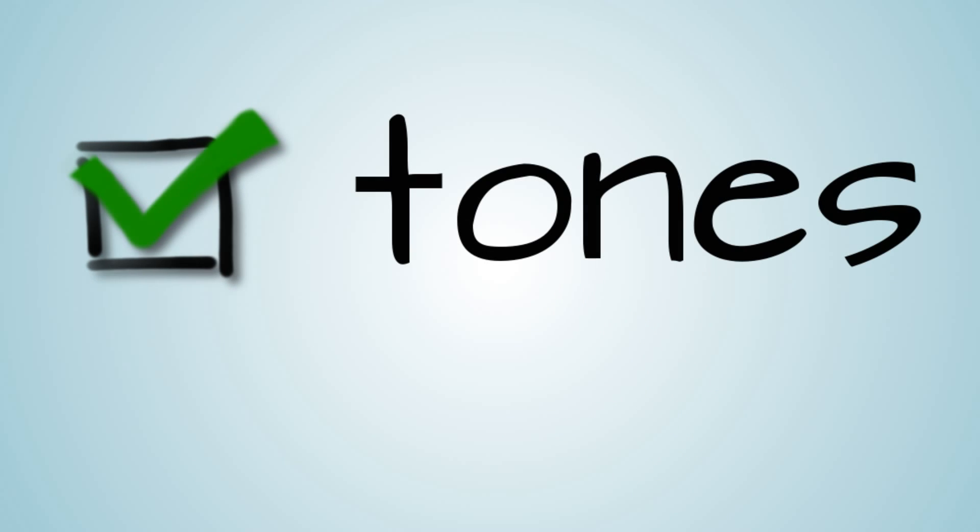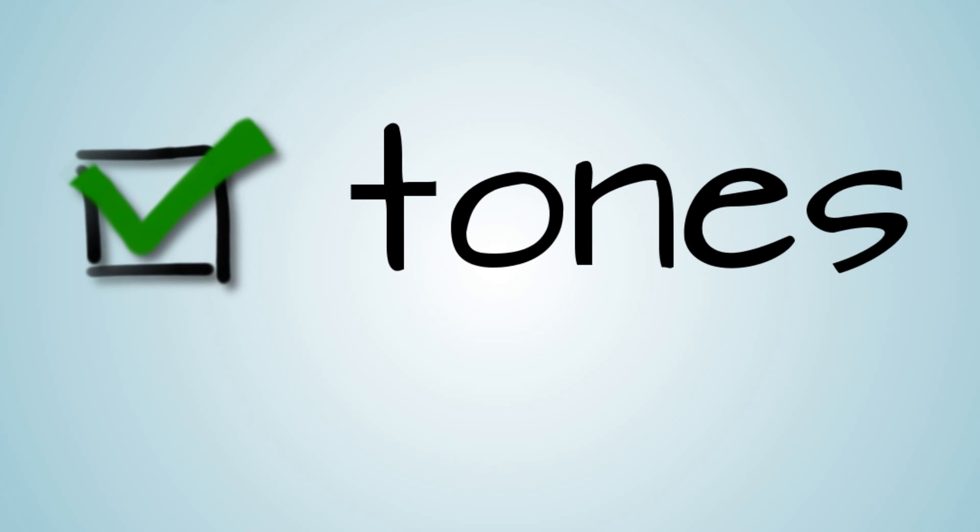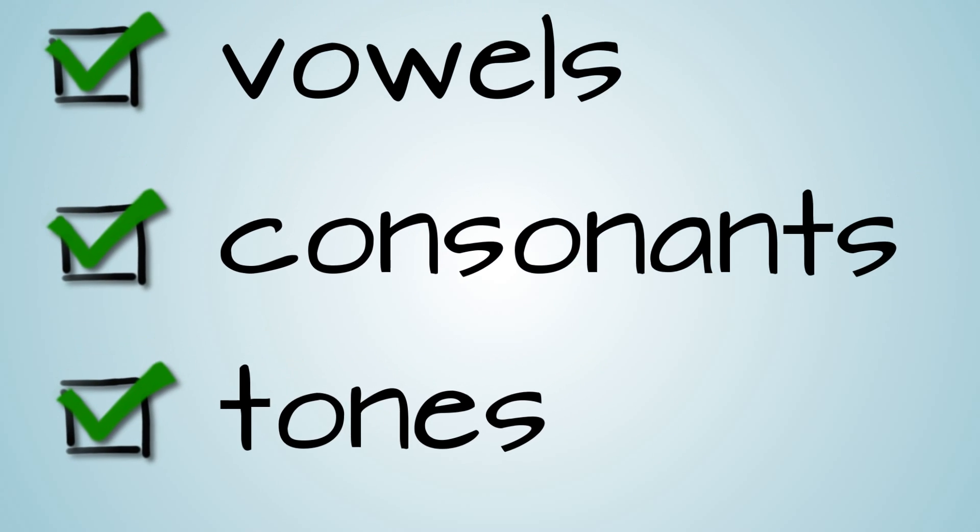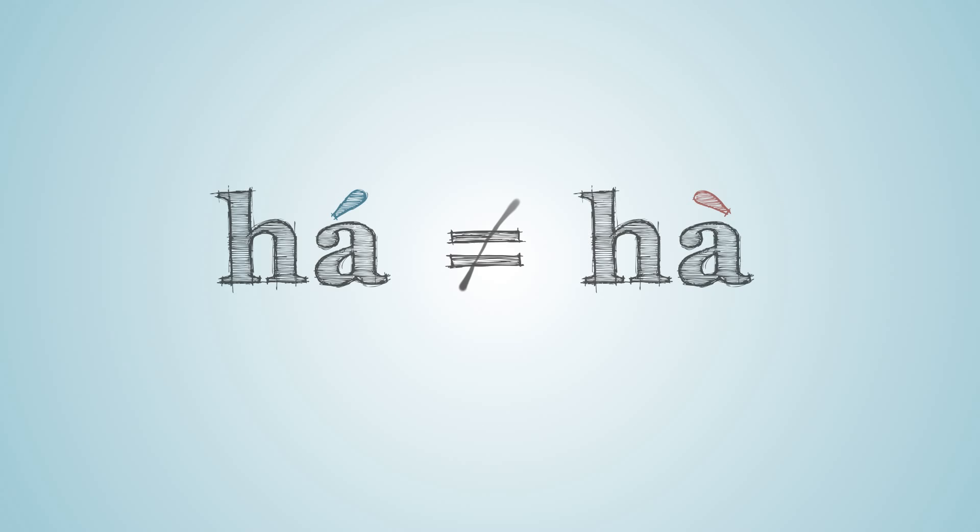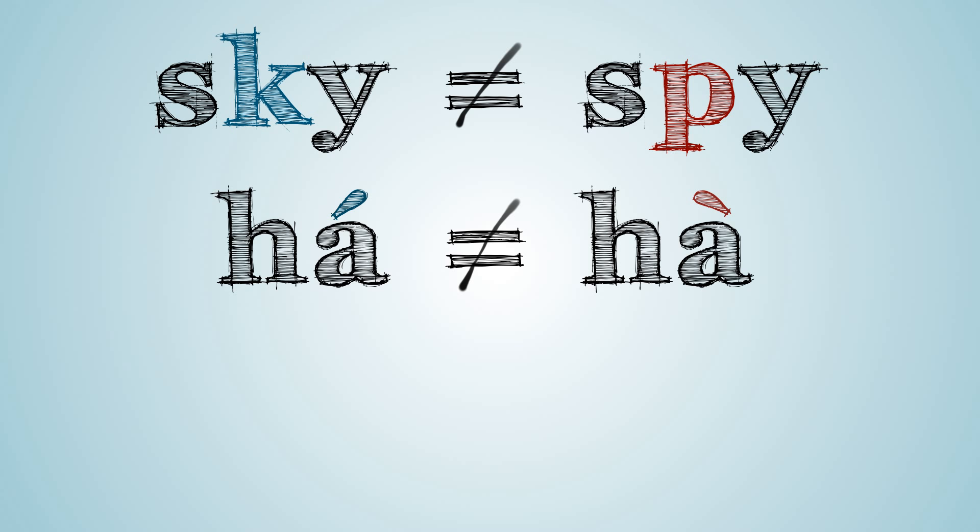Tones are an extra feature that tonal languages use to build words. Rising, level, and falling are as distinct as P, T, and K, so speaking a word in the wrong tone in one of these languages can sound as bad as putting a K where it doesn't belong.